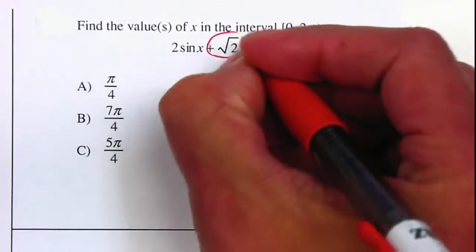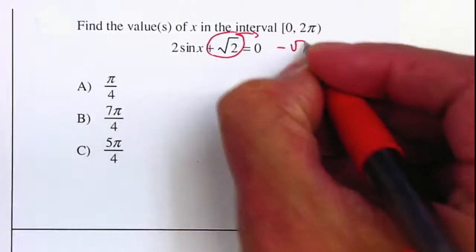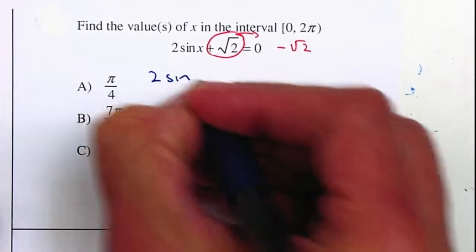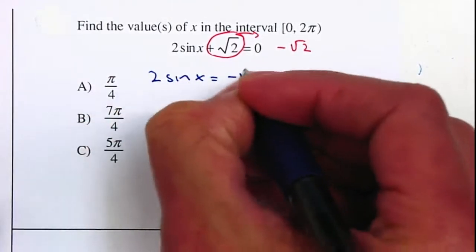So therefore, I'm going to move my square root to the right. As it passes, it becomes negative square root of 2. That will give me 2 sin x equals negative square root of 2.